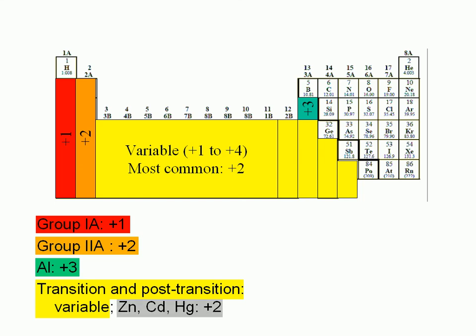Note that monatomic ions from zinc, cadmium, and mercury are always found to have a charge of plus two.